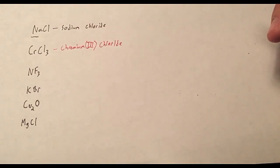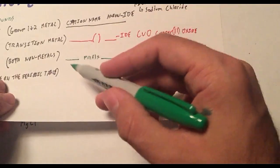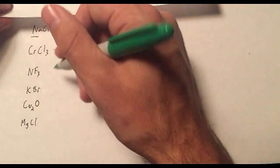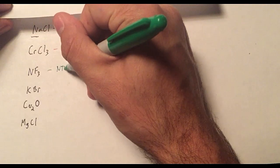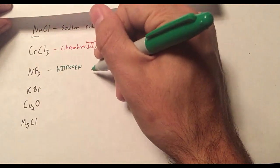So what you do is we follow the template. We get the name of the first compound and then the prefix. So we've got nitrogen.